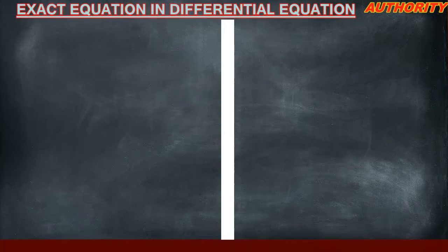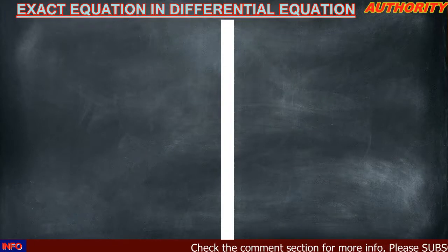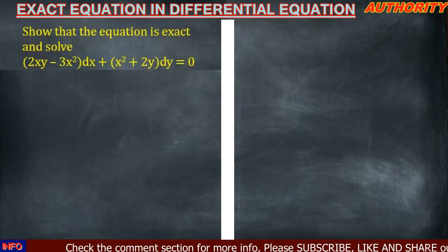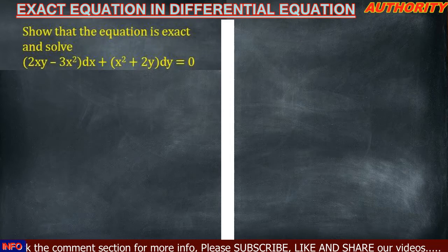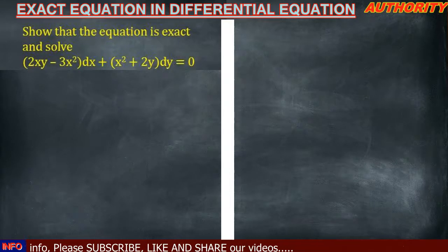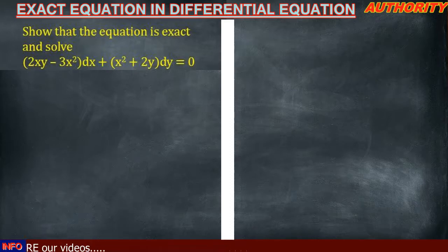Welcome. Today we want to talk about exact equations — how to solve a differential equation that is said to be an exact equation. Let's take a look at this question: show that this equation is exact and solve it. The equation is (2xy minus 3x²)dx plus (x² plus 2y)dy equals 0.